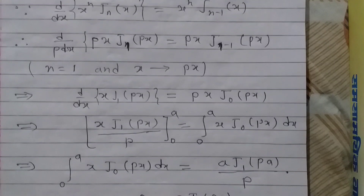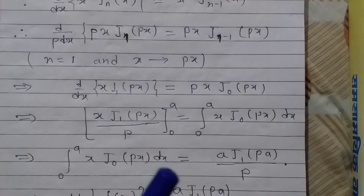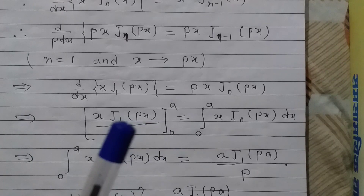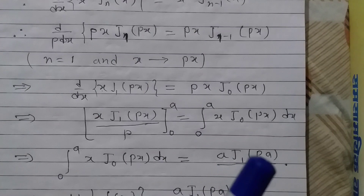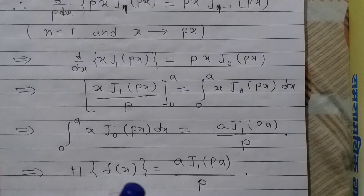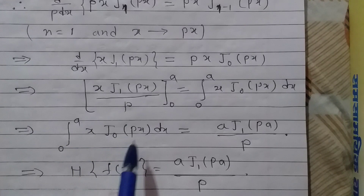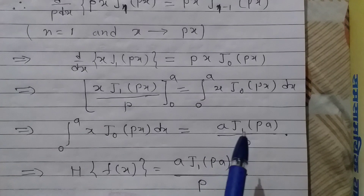Therefore, the value of the integral from 0 to a of x J₀(px) dx equals, after putting x equals to a, the expression a J₁(pa) upon p. And therefore, the Henkel transform of f(x), which equals this integral, has the value a J₁(pa) upon p. So the Henkel transform of f(x) is a J₁(pa) upon p.